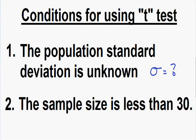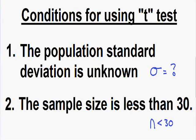The second condition is the sample size is less than 30. The sample size is always written with the letter N and it is less than 30. Both of these conditions need to be met to use the T-test: the population standard deviation is unknown, and the sample size is less than 30.